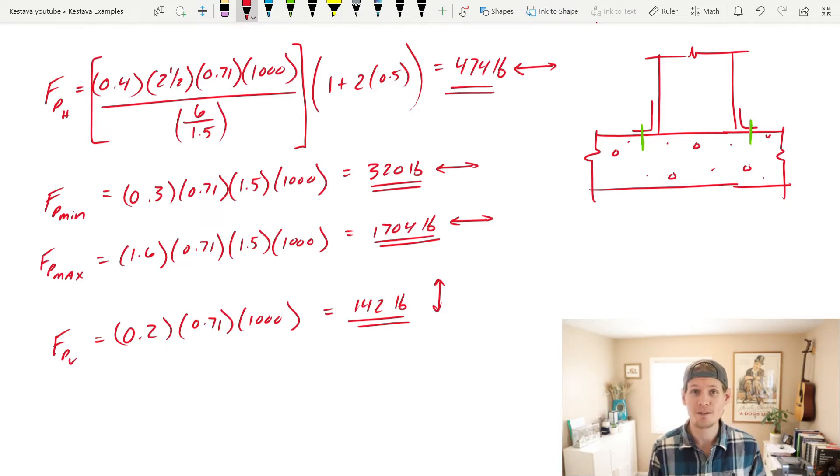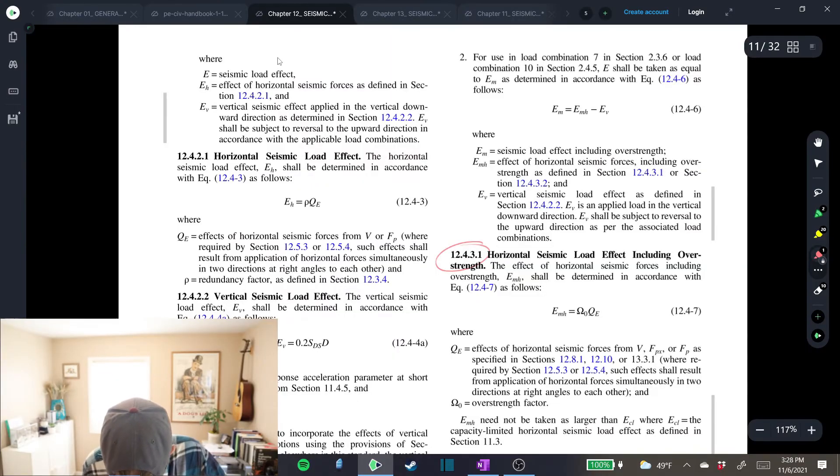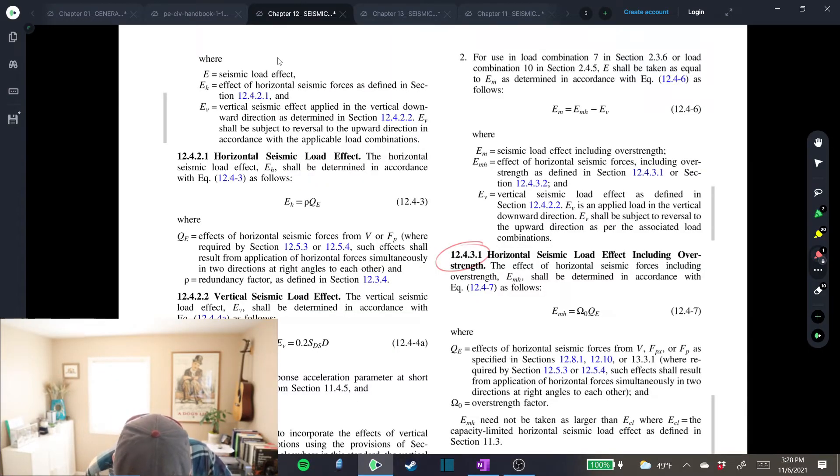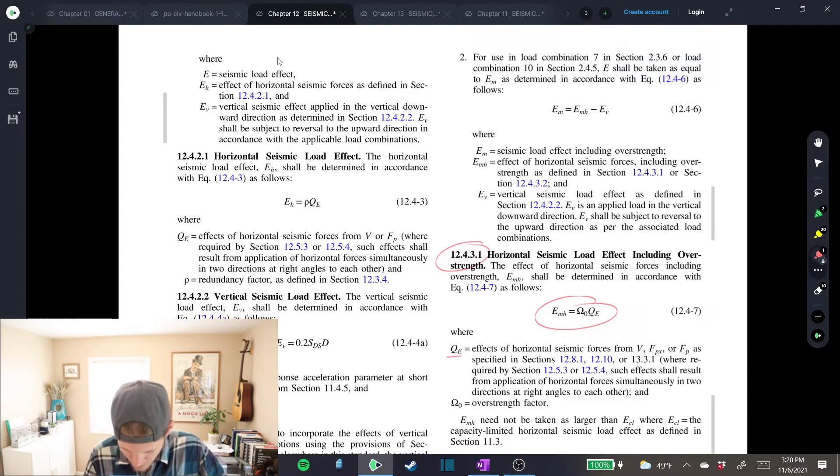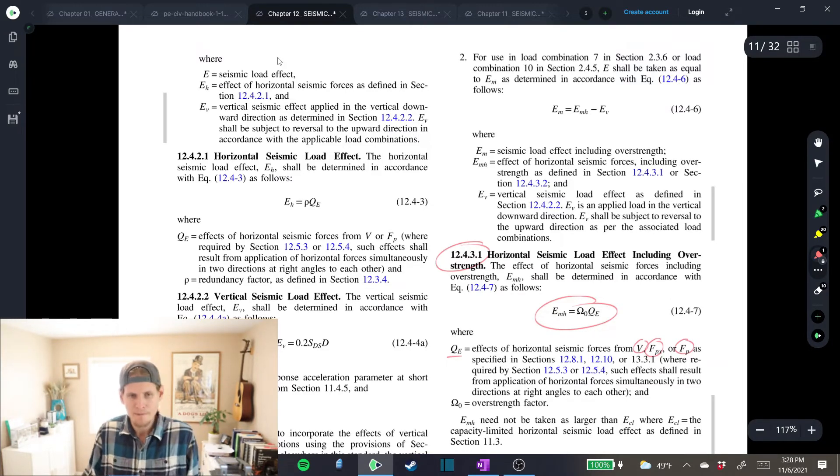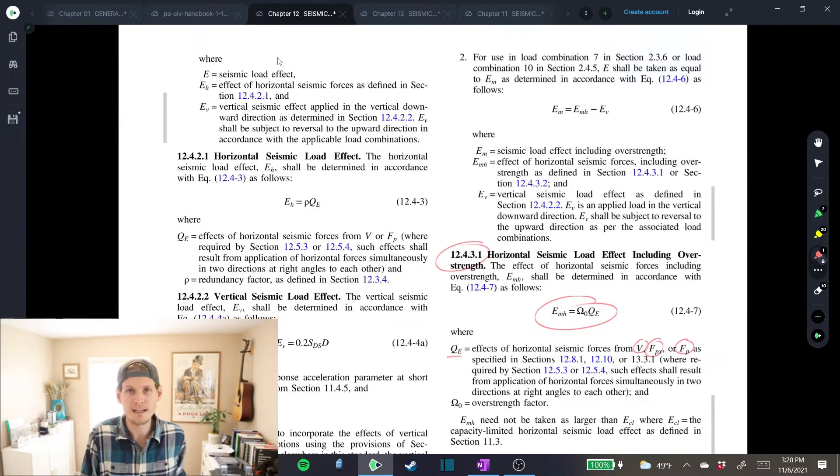Okay, so let's jump over to chapter 12.4 to further refine our loading criteria. We land ourselves here, and we want horizontal seismic load effects, including overstrength. That's our equation right there. And if we look at QE, QE is equal to the horizontal seismic forces of V, FPX, or FP. And that's dependent upon what analysis you're doing. Is it a building? Is it a non-building structure? Is it a structural component?